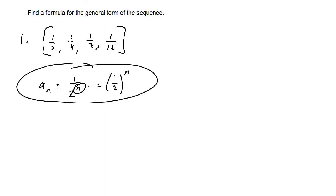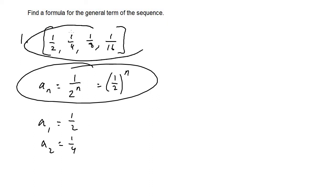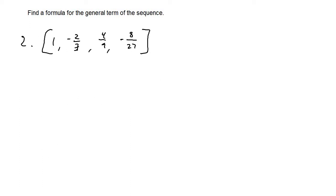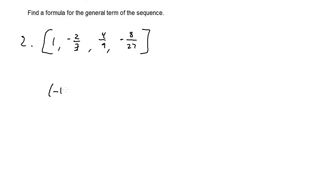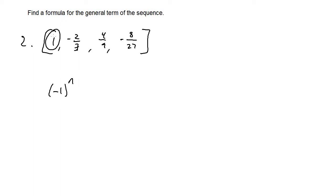You can double-check by plugging in values: a_sub_1 gives 1 over 2, a_sub_2 gives 1 over 4, and so on — matching the sequence. For number two, we have 1, negative 2/3, 4/9, negative 8/27. The terms alternate between positive and negative, so we need the alternator negative one to some power. Since the first term is positive, we need negative one to the (n minus 1) so that plugging in n=1 gives negative one to the zero, which is 1.